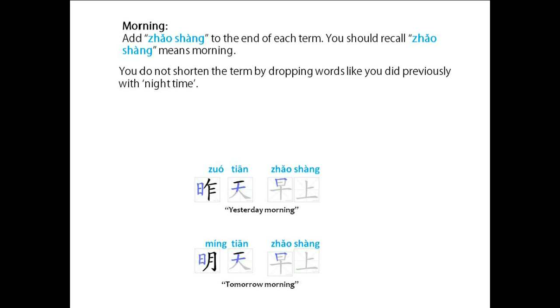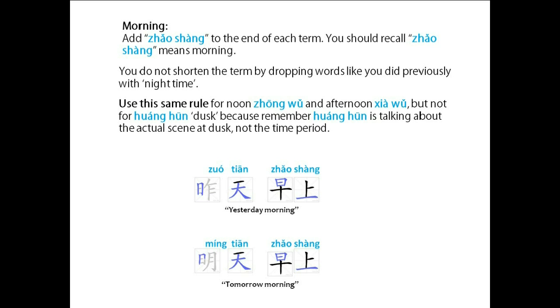You do not shorten the term by dropping words like you did previously with nighttime. Also, use this same rule for noon (zhōng wǔ) and afternoon (xià wǔ), but not for 黄昏 (huáng hūn), dusk. Because remember, 黄昏 is talking about the actual scenery, not the time period.